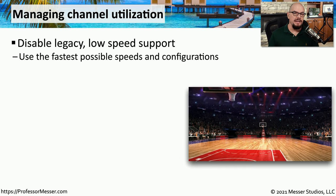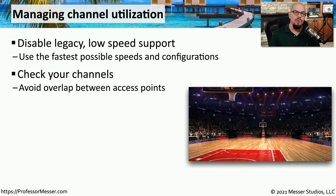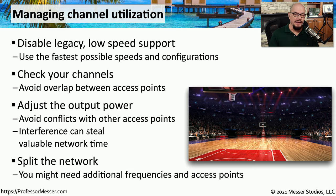There are a number of settings you can configure to improve efficiency. If the access point is set to legacy mode or low-speed support, you may want to disable that so the access point can run at its fastest speeds. Also check for nearby devices that could be interfering with your frequencies, and consider changing your access points to different frequencies if interference is found. If you have multiple access points, try adjusting output power settings to reduce inter-AP interference. If a single access point is completely overloaded at 100% frequency use, consider adding a separate access point on different frequencies to split the load.